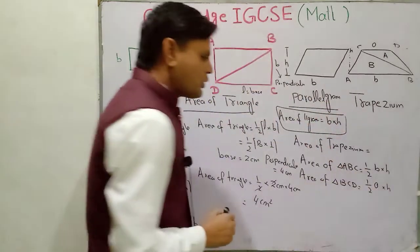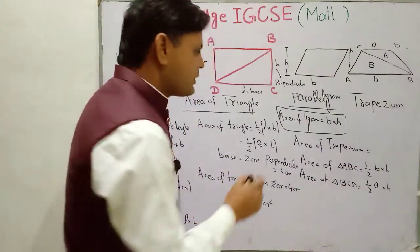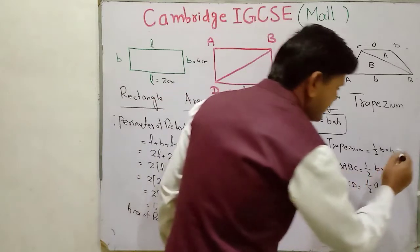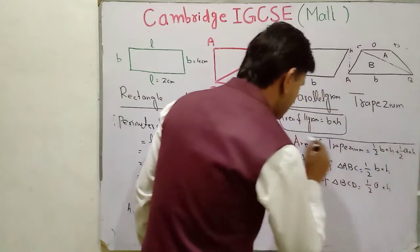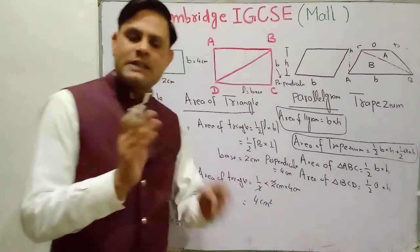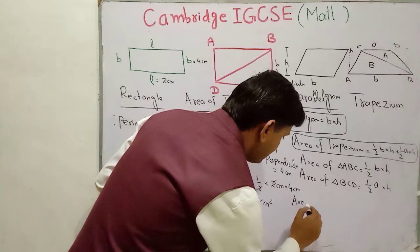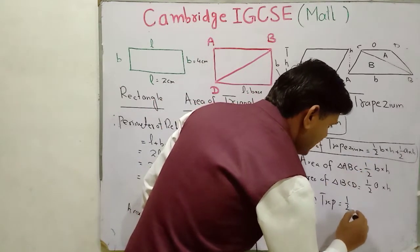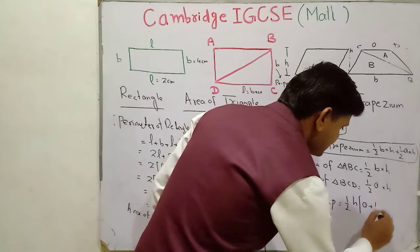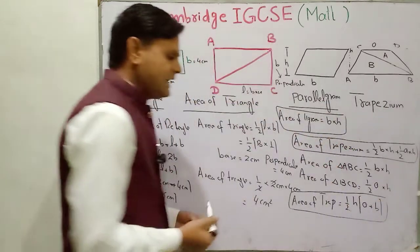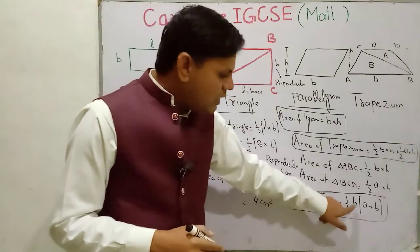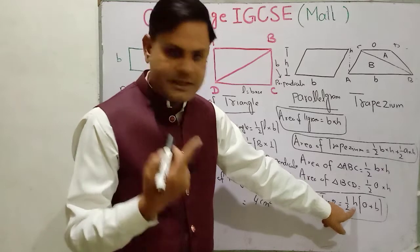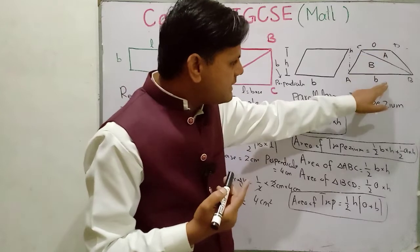Total area of trapezium is the sum of these two triangles: one-half times A times H plus one-half times B times H. Taking one-half and H as common, the area of trapezium equals one-half times H times (A plus B). Here H represents the height, and A plus B represents the lengths of the two parallel sides.